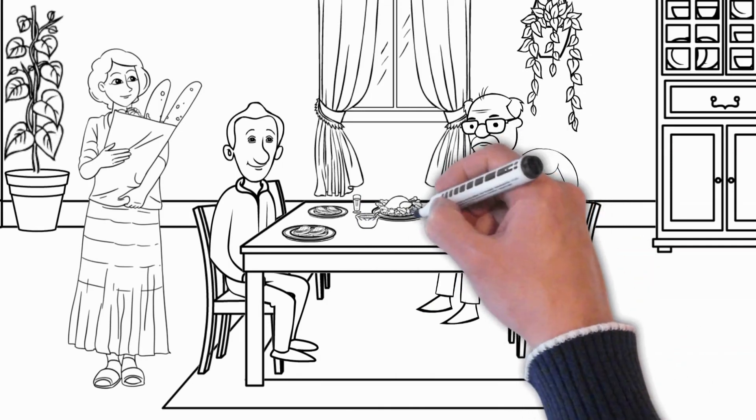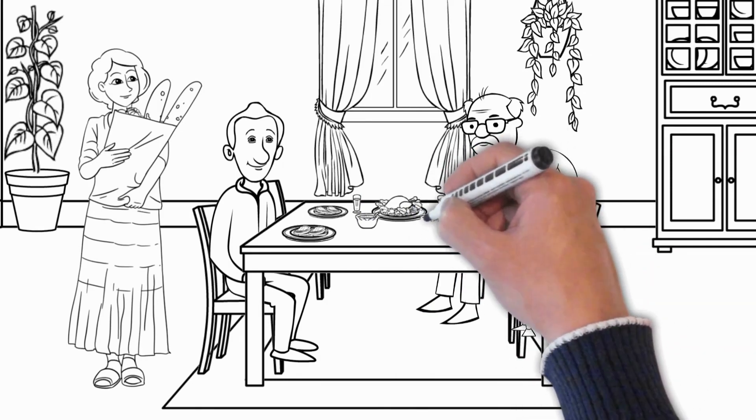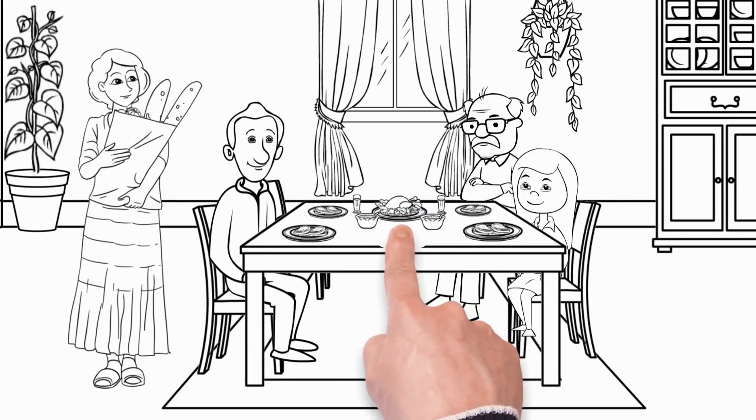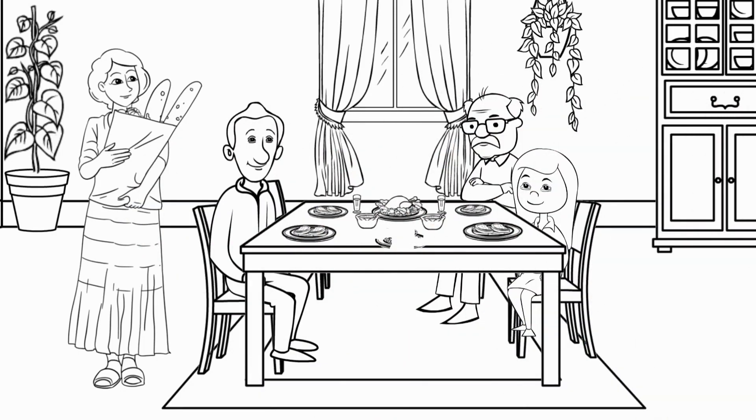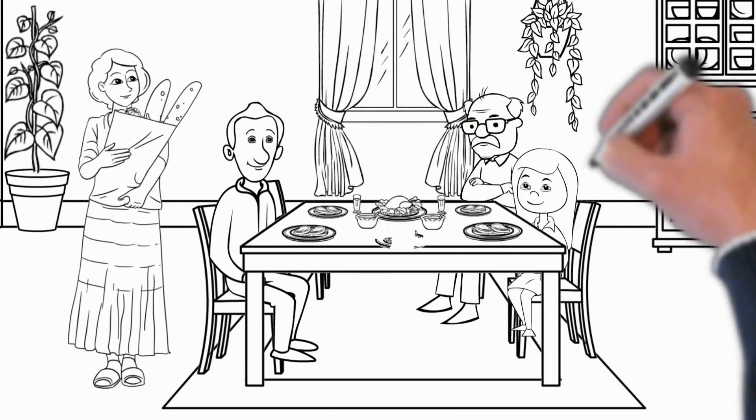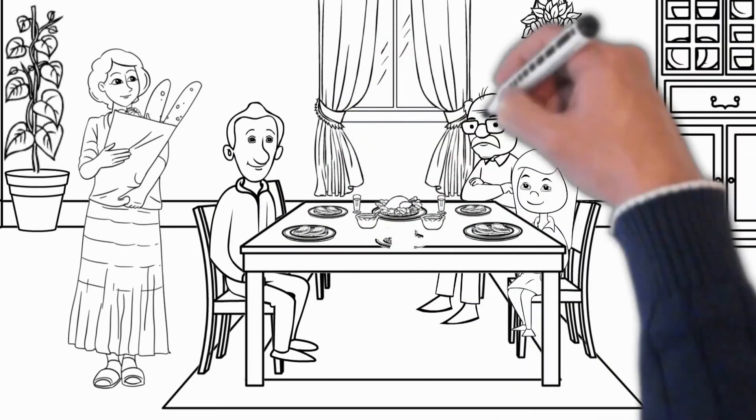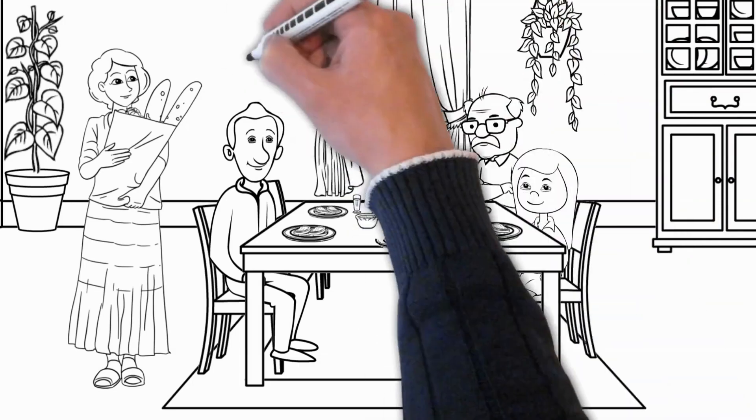At the same time, young people make too much personal information publicly available and often suffer from it. Such openness turns into conflicts with the employer, bullying, or banal theft of personal data. All this is becoming part of the global internet security problem.